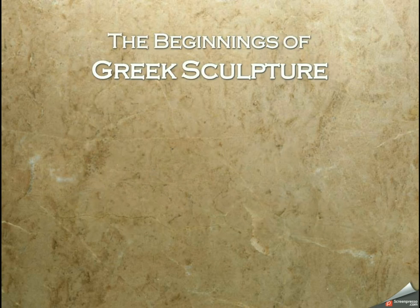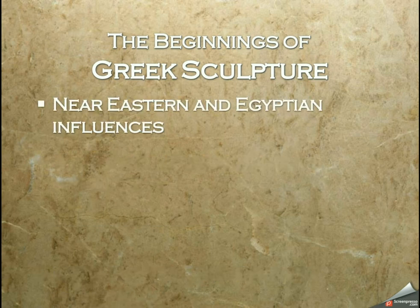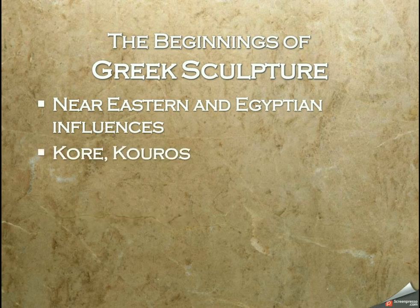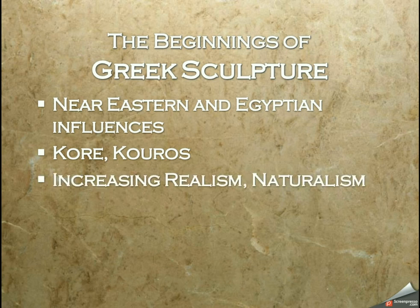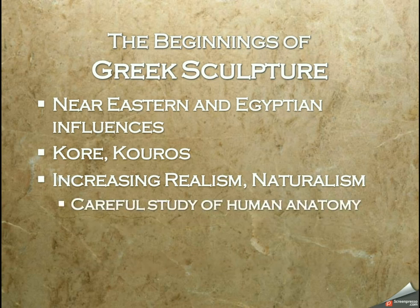This brings us to the beginnings of Greek sculpture. The Near Eastern and Egyptian influences are very obvious and far-reaching. There are two main artistic conventions: the Kora and the Kouros — the standing female figure and the standing male figure. There is an increasing sense of realism and naturalism in their sculpture, much more so than what we saw with the Egyptians and other more ancient empires.